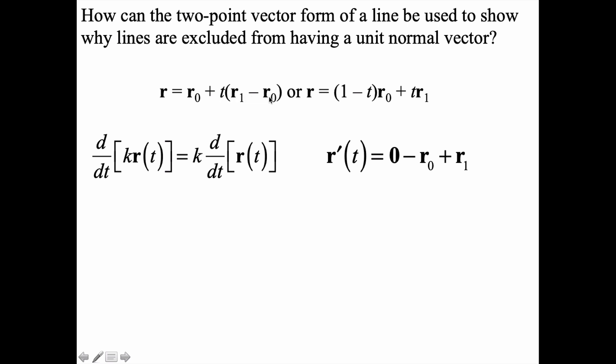Taking the derivative of that would be r''(t). Since r₀ and r₁ were both said to be constant vectors, we know that r''(t) is just a sum of three zero vectors, giving us the zero vector.